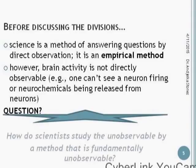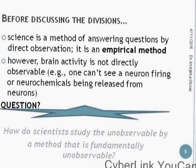Before discussing the divisions, we need to remember that science is a matter of answering questions by direct observation — so it's an empirical method. The difficulty here is that brain activity is not directly observable; we cannot see it with our own eyes. Although today we have multidimensional imaging, it still doesn't mean we can observe it directly. So how do we study something that we cannot observe? I will try to answer this a bit later.